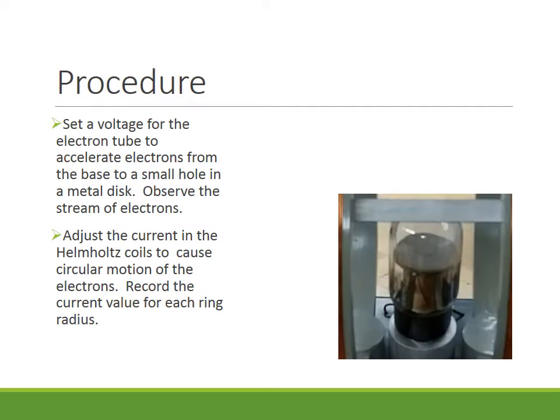The procedure is to set a voltage for the electron tube so that electrons accelerate from the base of the tube up through a small hole in a metal disk. You'll be able to observe the stream of electrons as sort of a blue line. Then we will adjust current in the Helmholtz coils to cause the electron beam to bend into a circular motion and we will record the value of the current that causes the circle to bend into a particular radius.